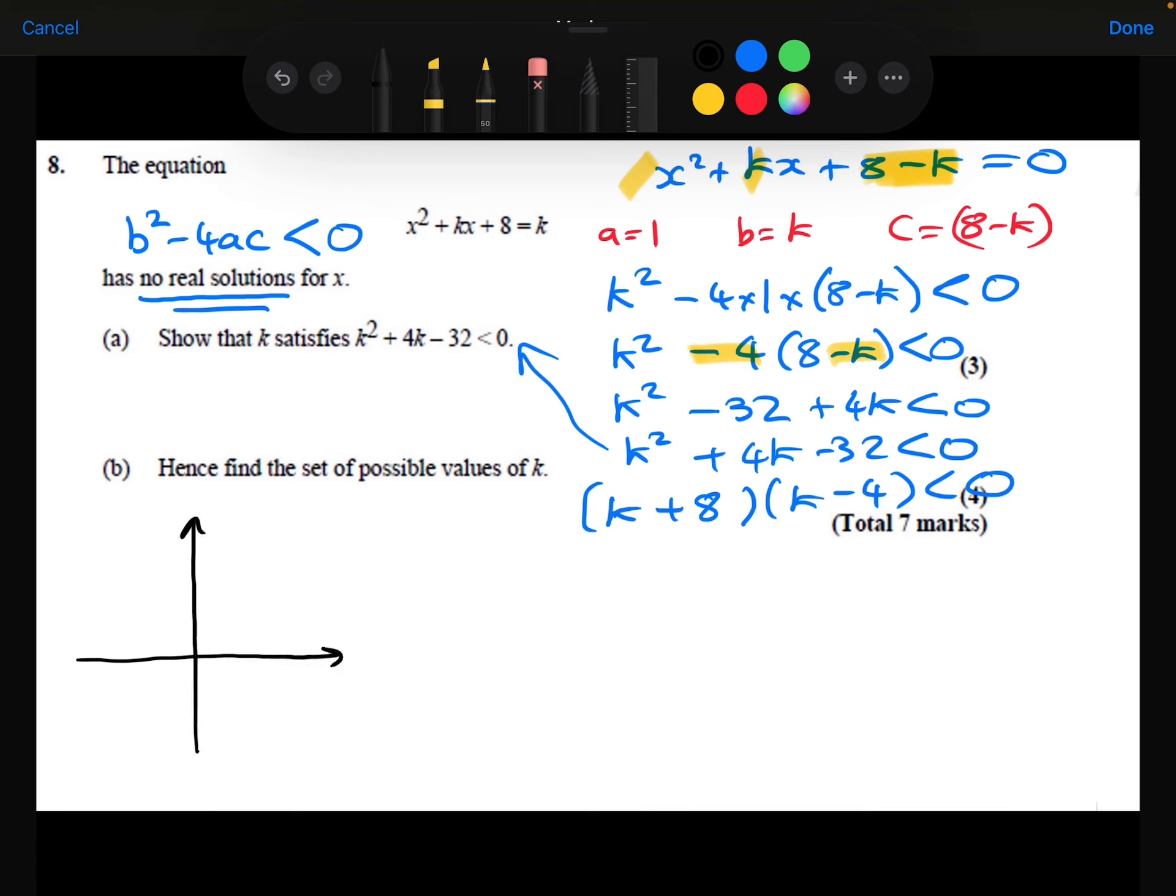So let's draw a quick sketch to make sure we get this right. Like I said, the roots are minus 8 and 4. So my quadratic discriminant is going to look like this. And we're interested in when that is negative, when it is less than 0. Well, it's less than 0. It's negative in between the minus 8 and the 4. So my answer is that k has to be greater than minus 8, but less than 4.